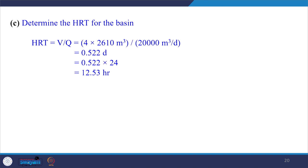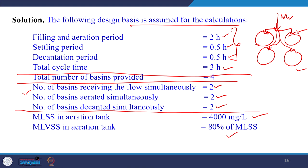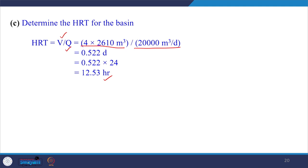The HRT of the basin is calculated as: HRT = (4 × 2610 m³) / 20,000 m³/day = 12.5 hours. These parameters may be adjusted if they do not meet the desired treatment criteria — we can always change the assumptions to optimize the system design.